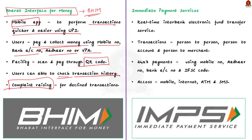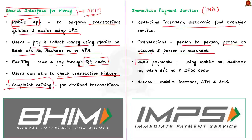Coming to IMPS — Immediate Payment Services. IMPS is a real-time inter-bank electronic fund transfer service, capable of processing person-to-person, person-to-account, and person-to-merchant transactions. Through IMPS, individuals can make payments 24/7 using their mobile number, Aadhaar number, bank account and IFSC code. Users can access IMPS through multiple channels such as mobile internet, ATM and even SMS.